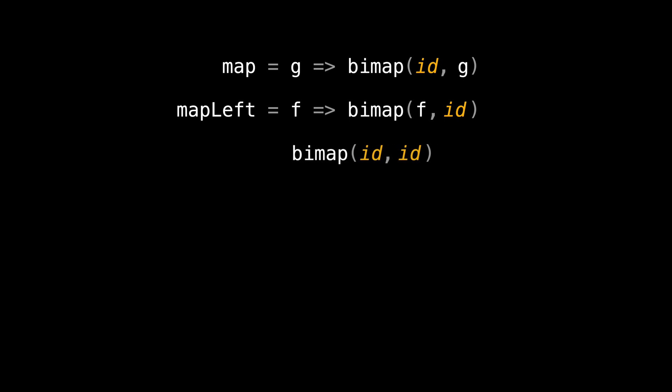What would happen if we pass ID to both of the bimap parameters? This is effectively returning a function that doesn't change neither of a structure's first or second type parameters. Or in another words, this is same as ID itself.